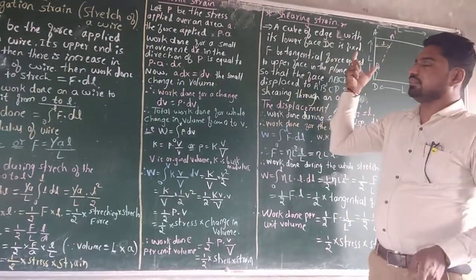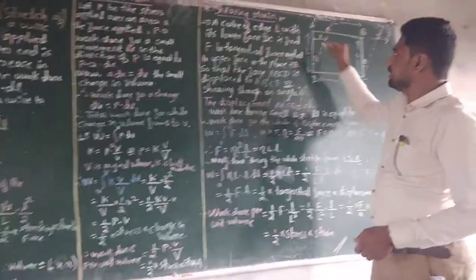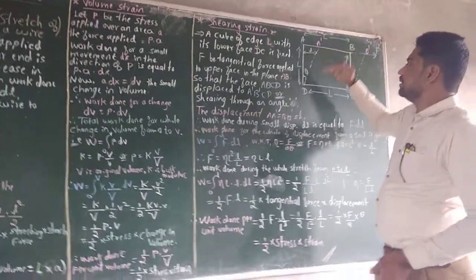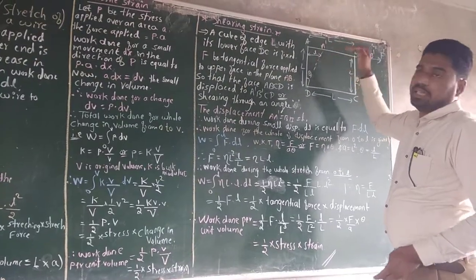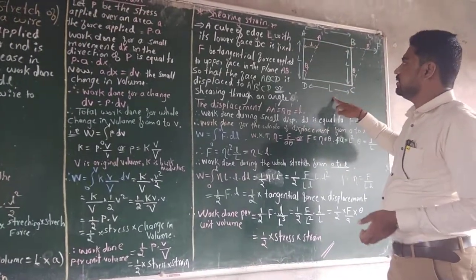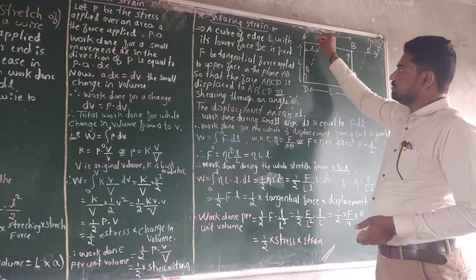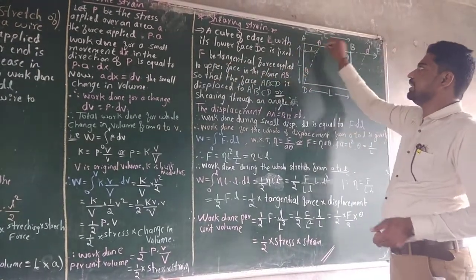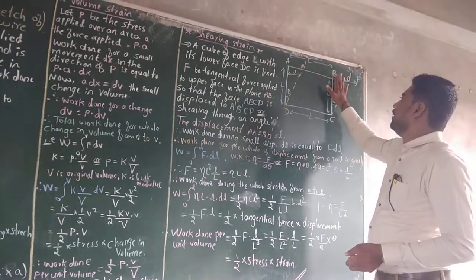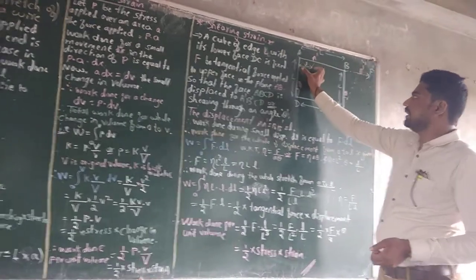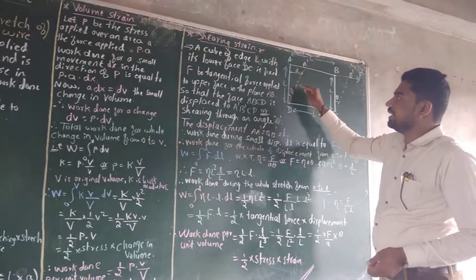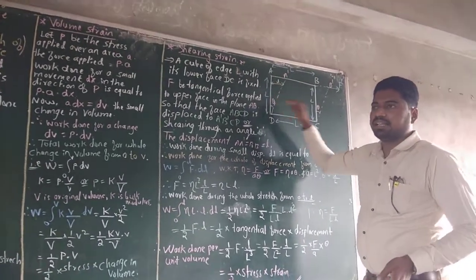Last case is shear strain. Take a cube ABCD where the lower end is fixed and the upper end is movable. Capital L is the length of each edge. When you apply a tangential force F to the upper face AB, point A shifts to A-dash and B shifts to B-dash with displacement small L. This creates a shear angle theta.